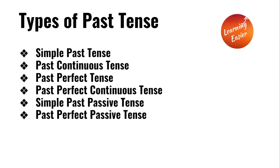Types of past tense: Simple past tense, past continuous tense, past perfect tense, past perfect continuous tense, simple past passive tense, and past perfect passive tense.